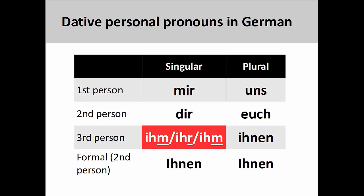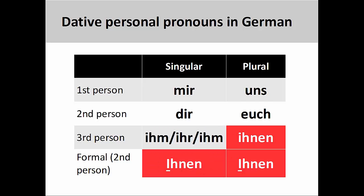Like the dative definite article der, the feminine personal pronoun ihr also ends in -r, which can help you in identifying this pronoun as being dative.